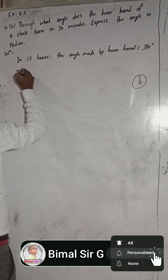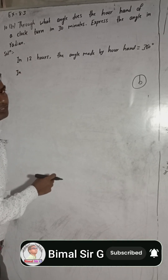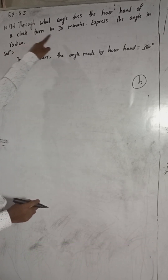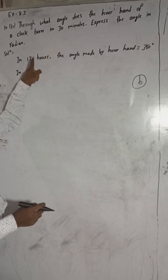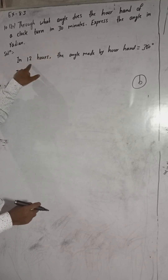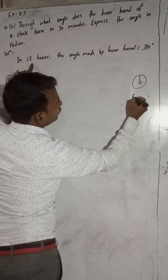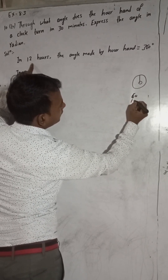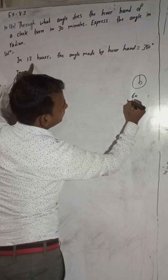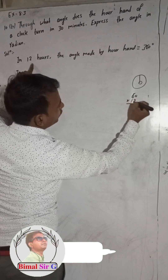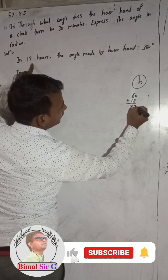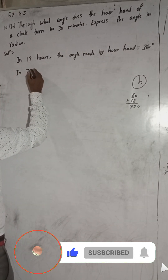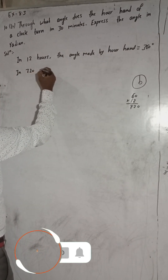Now, 12 hours will be converted into minutes, because we have to find the angle for 30 minutes. So we need to change 12 hours into minutes. 12 hours means 12 multiplied by 60, which equals 720 minutes.